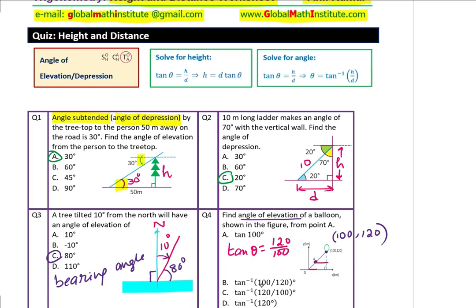And therefore, theta will be tan inverse of 120 over 100. And therefore, the answer should be C. Does it make sense to you? So, in these four questions, we have just tested the basics about height and distance problems. Perfect.